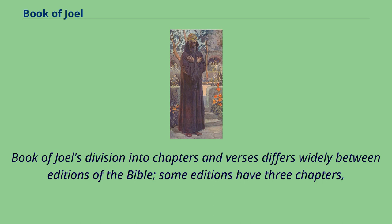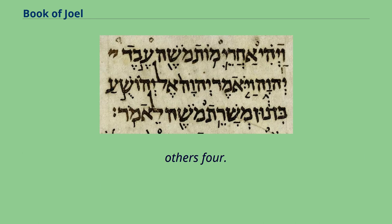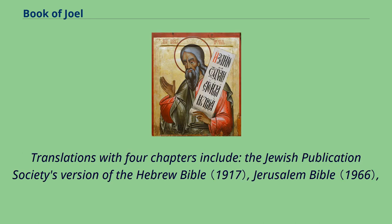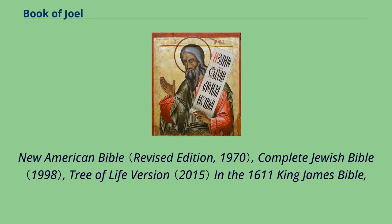The Book of Joel's division into chapters and verses differs widely between editions of the Bible. Some editions have three chapters, others four. Translations with four chapters include the Jewish Publication Society's version of the Hebrew Bible, Jerusalem Bible, New American Bible, Complete Jewish Bible, Tree of Life version, and the 1611 King James Bible.